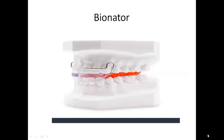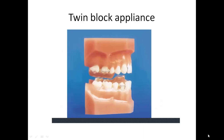The bionator is a removable appliance that is less bulky than the activator. It consists of a lingual horseshoe-shaped acrylic with a wire in the palatal area. Facets guide the maxillary and mandibular posterior teeth and hold the mandible forward, with a labial bow anterior to the maxillary incisors extending distally.